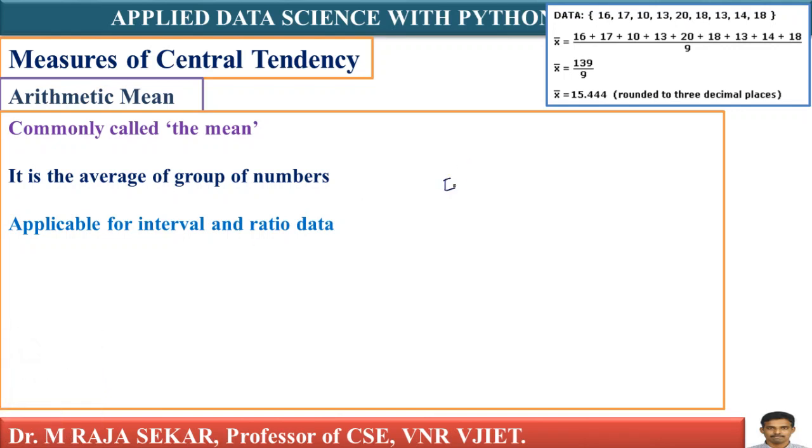What does it mean? Interval data means something like 2000 to 2020. Ratio data means height or weight. Heights and weights can be considered as ratio data because decimal points are allowed: 10.5, 9.5, like this. Your arithmetic mean is applicable for interval data as well as ratio data.